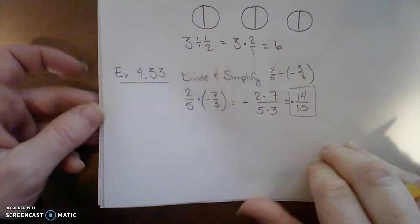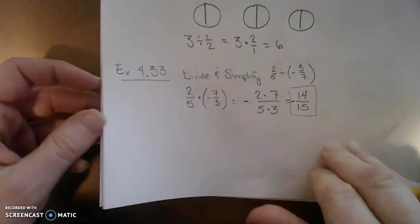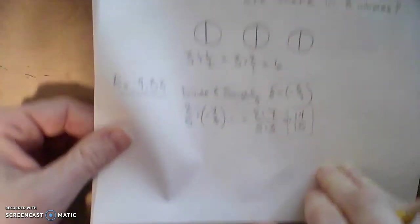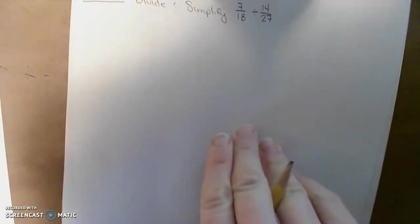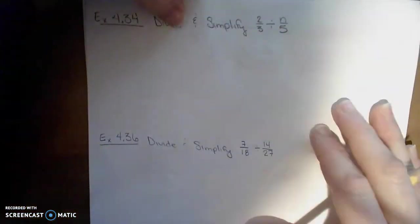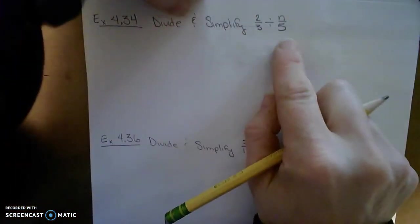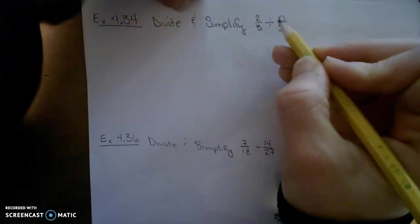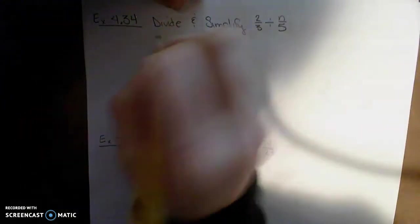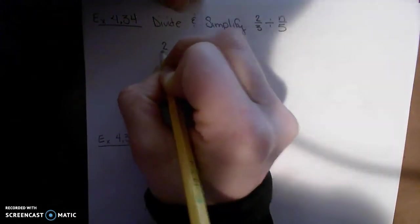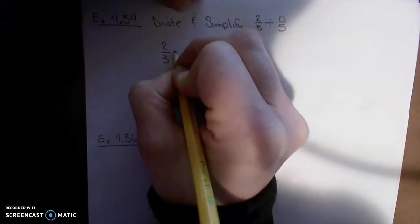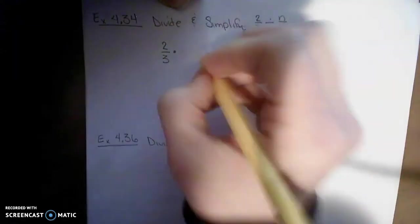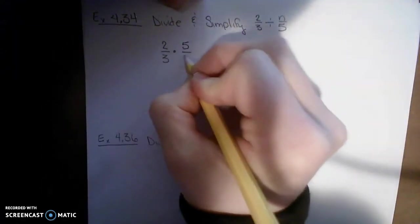So dividing is basically just multiplying. Let's do another example. Divide and simplify 2 thirds divided by the fraction n over 5. All right, so don't let that variable confuse you. It's going to be the same procedure. We start with the 2 thirds. And then we multiply by the reciprocal of the number. 5 over n.